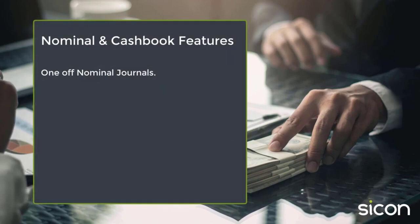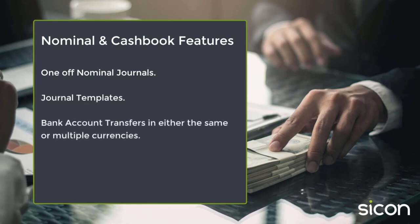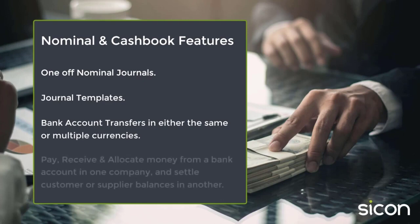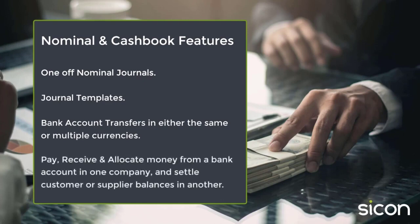Cycon Intercompany nominal and cash book features include making one-off nominal journals, creating journal templates which you can then process on a regular basis if needed, bank account transfers in either the same or multiple currencies, and the ability to pay, receive, and allocate money from a bank account in one company and settle customer and supplier balances in another.